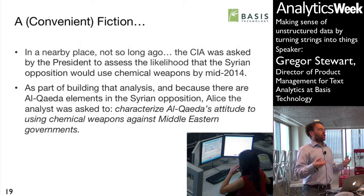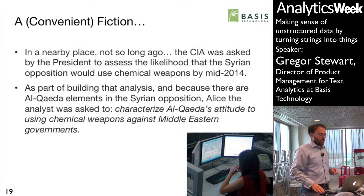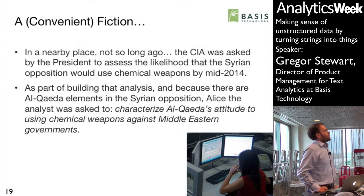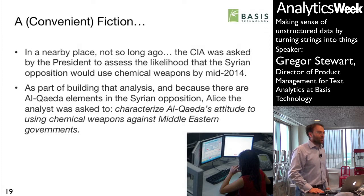Right about here — a few hundred miles away and not that long ago — some CIA analyst was asked: could you tell us how likely it is that the Syrian opposition is going to use chemical weapons in this timeframe? As part of building that analysis, because there are Al-Qaeda elements in that Syrian opposition, Alice the analyst was asked to characterize Al-Qaeda's attitude to using chemical weapons against Middle Eastern governments.